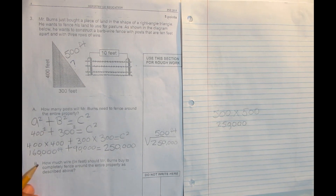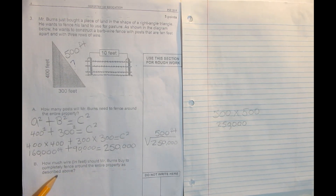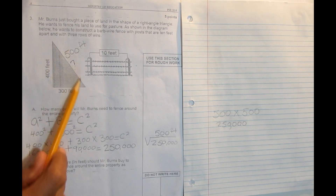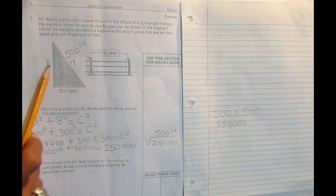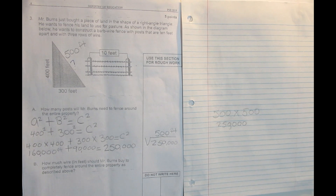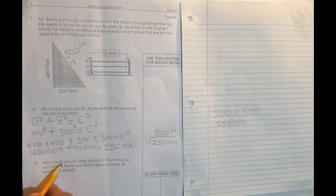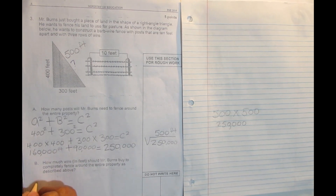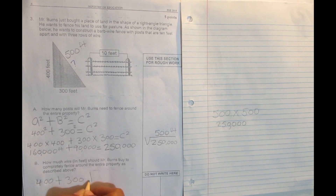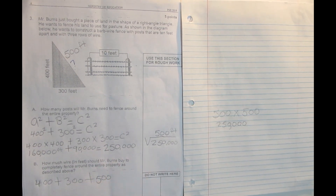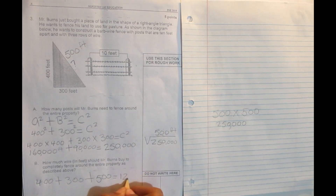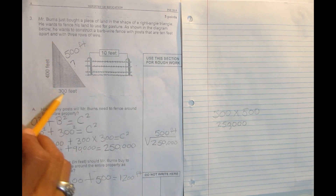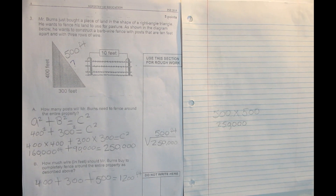To continue with Part B: how much wire in feet should Mr. Burns buy to completely fence around the entire property as described? Now that we know the entire perimeter — 400 feet, 500 feet, and 300 feet — we add them up. 400 plus 300 plus 500 equals 1,200 feet. So the entire land perimeter is 1,200 feet.